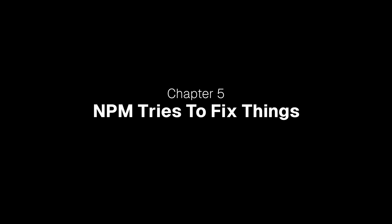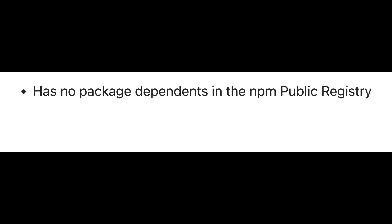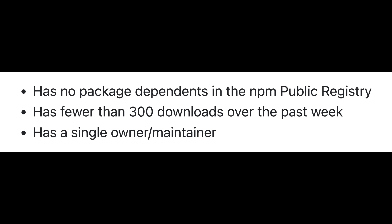Chapter 5: NPM Tries to Fix Things. On March 29th, 2016, NPM published their new policy around unpublishing packages. They acknowledged that the unrestricted ability to unpublish packages was dangerous. Their new policy had two big changes: one, you can only unpublish a package within 24 hours of it being published; and two, you cannot unpublish a package if any other packages depend on it. These changes hammered their support queues, so much so that in 2020 they revisited these policies. You're allowed to unpublish your package if it has no package dependents in the NPM registry, it has fewer than 300 downloads per week, and it has a single owner or maintainer. They bumped that 24-hour window to 72 hours, and in that window they only enforce one rule: that no other packages in the NPM public registry depend on it. Seems pretty reasonable, right?